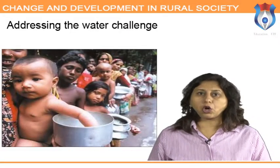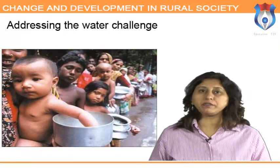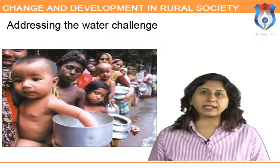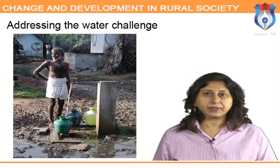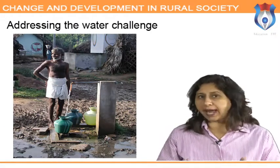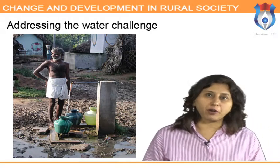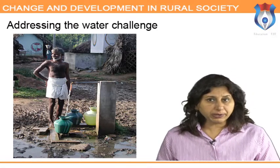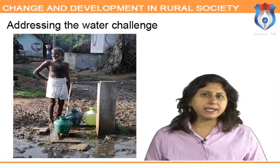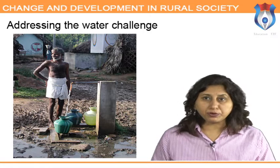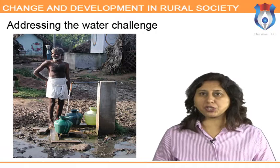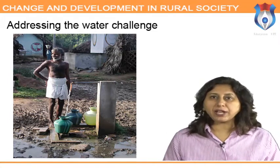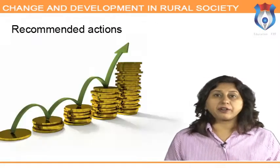Addressing the water challenge: rapid growth in non-agricultural water demand, the unsustainable overdraft of groundwater, and a slowdown in the growth of water supply investments are leading to growing water challenges in agriculture. Steps to overcome these include increased investments in agricultural research to boost productivity, replacing generalized domestic and industrial water subsidies with subsidies targeted to the poor, designing water policy to induce improved technology and conservation, and encouraging crop diversification. Water rights combined with appropriate incentives are essential for rational water allocation.